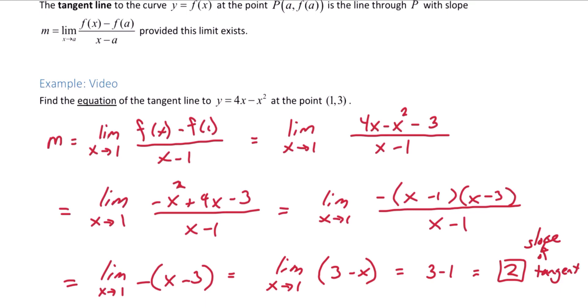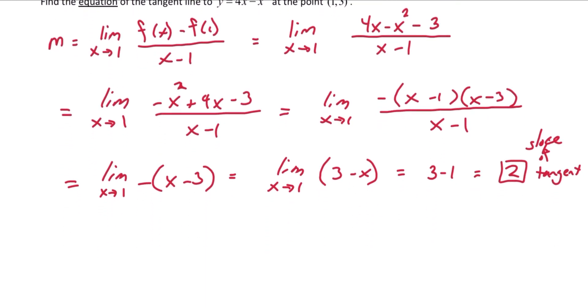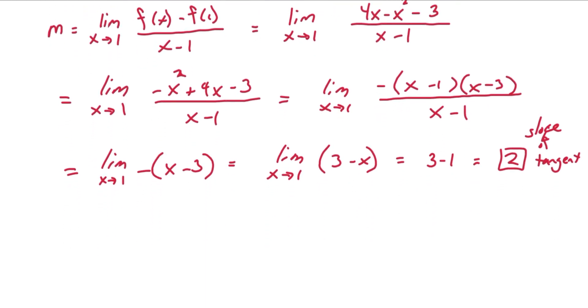We still need to find the equation of the tangent line. From here we can use point slope form y minus y1 equals m times x minus x1 and fill in